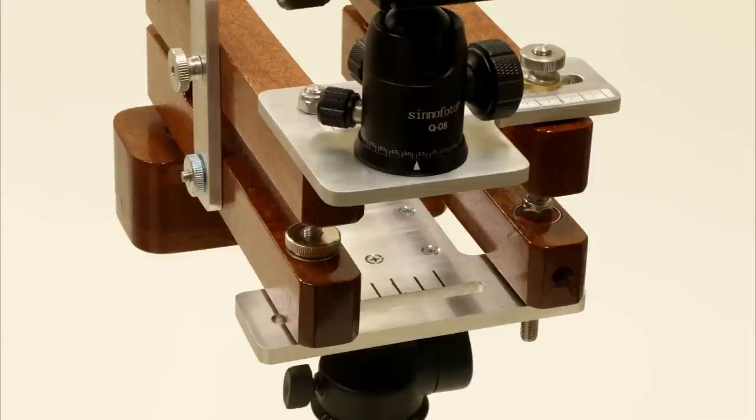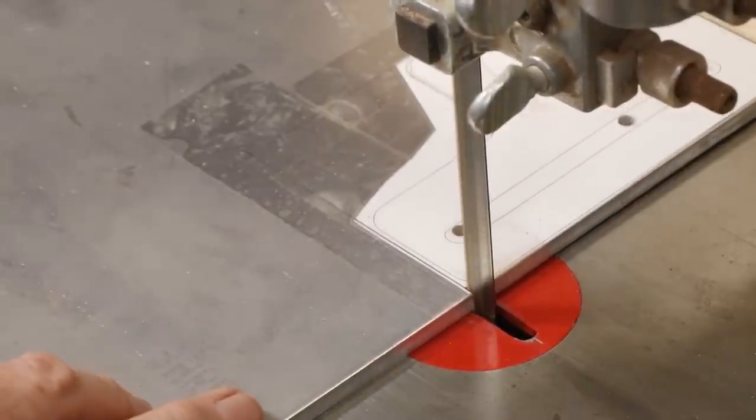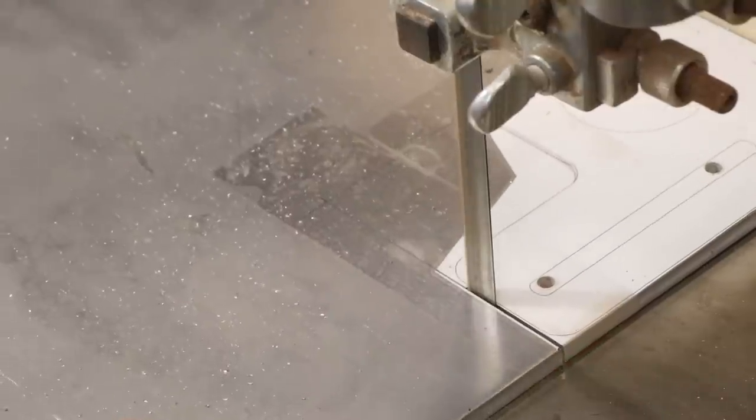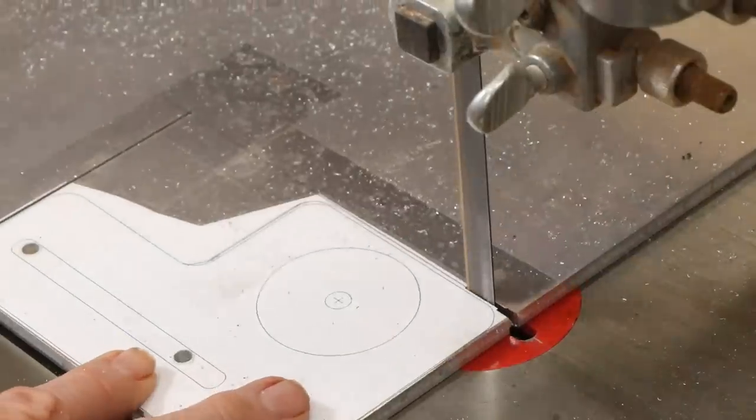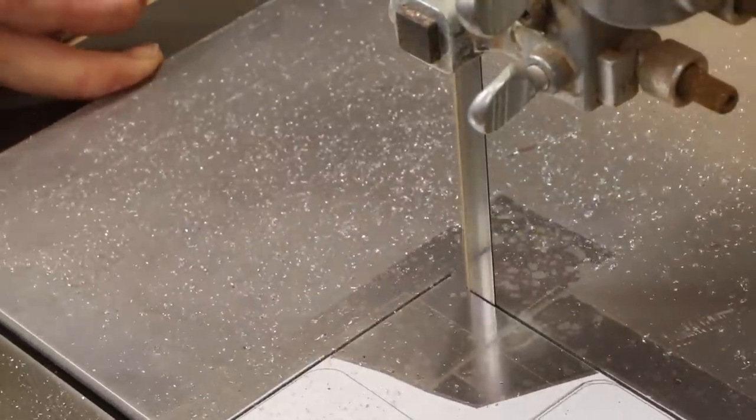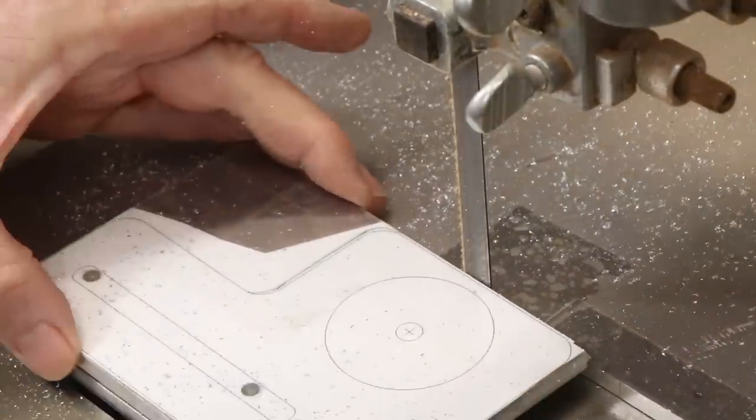My camera arm design needed two plates made from thick aluminum. I wanted rounded outer and inner corners, and I needed a slot in both plates. My solution for these parts was to cut the shapes a little oversized on the bandsaw, and then route the final shapes by following a template.